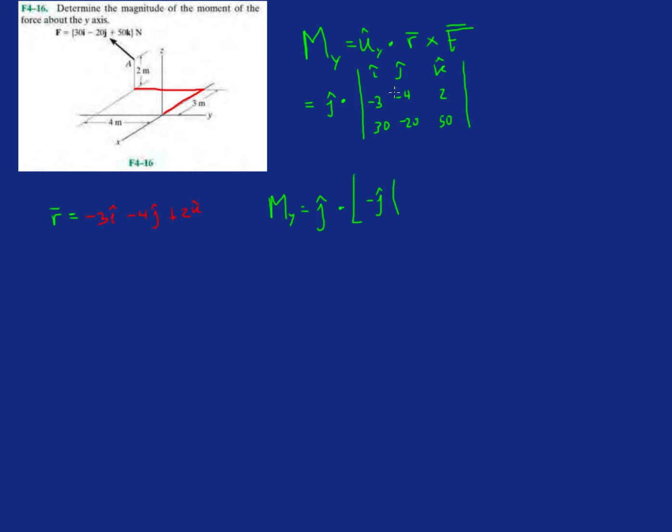Okay, it's going to be negative 3 times 50, minus 2 times 30. And you could have done i, you know, negative 4 times 50, minus 2 times minus 20. But again, we don't need that. So this gives us j dot, what's in here? Minus 150, minus 60, so that's minus 210.